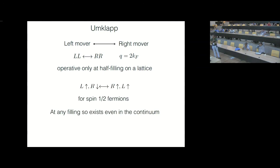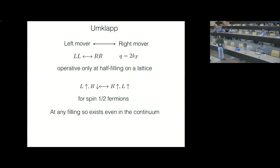It's interesting that you can have a process analogous to umklapp without a lattice when you have spin-half fermions. A left-moving spin-up can become a right-moving spin-down — because you now have an additional label of spin — and basically the spin-ups and spin-downs can go from being left movers to right movers, but on the whole you have one left mover and one right mover both before and after the process. So there's a way in which this can happen for spin-half fermions even in the continuum.